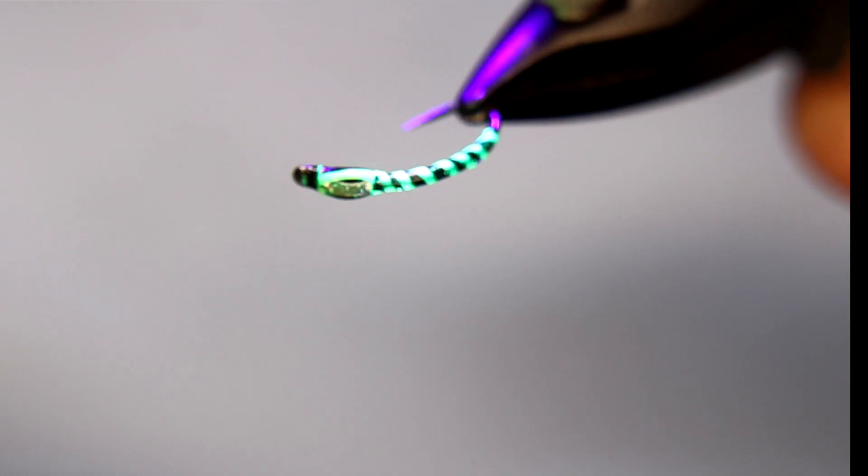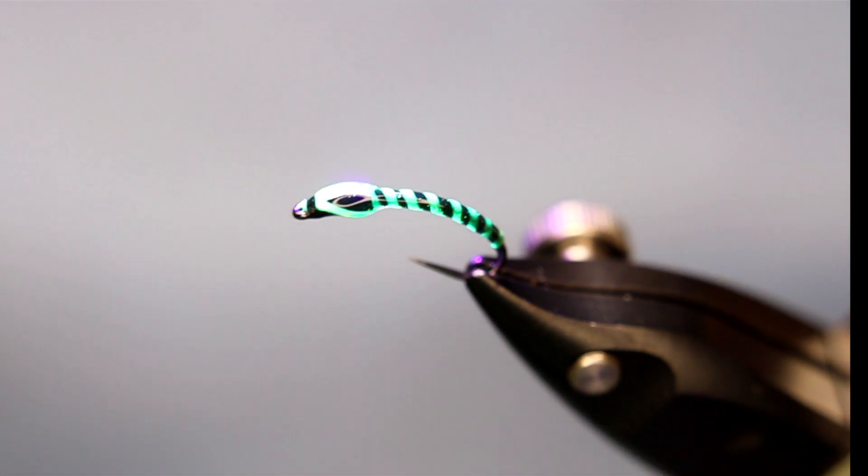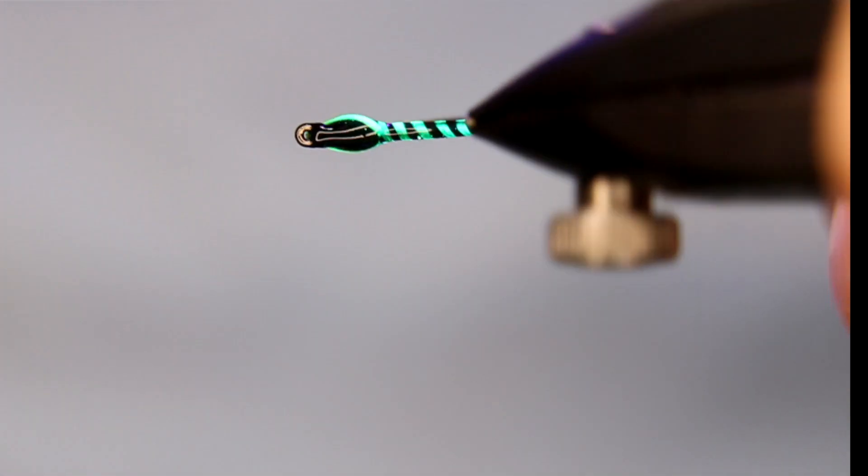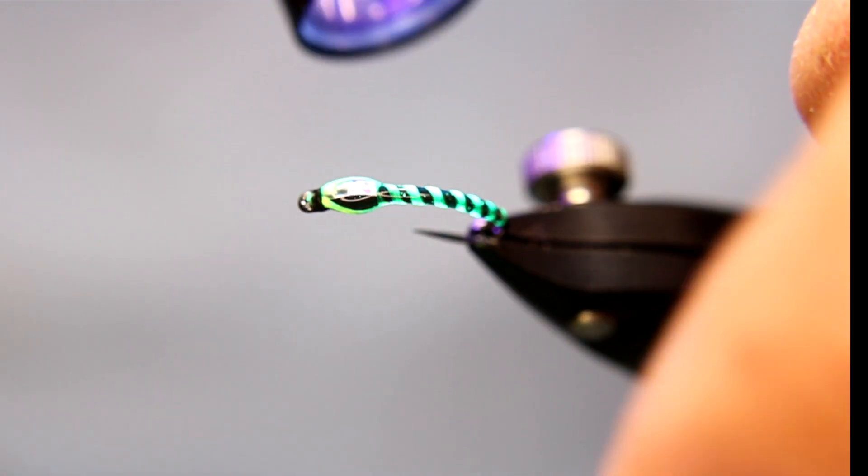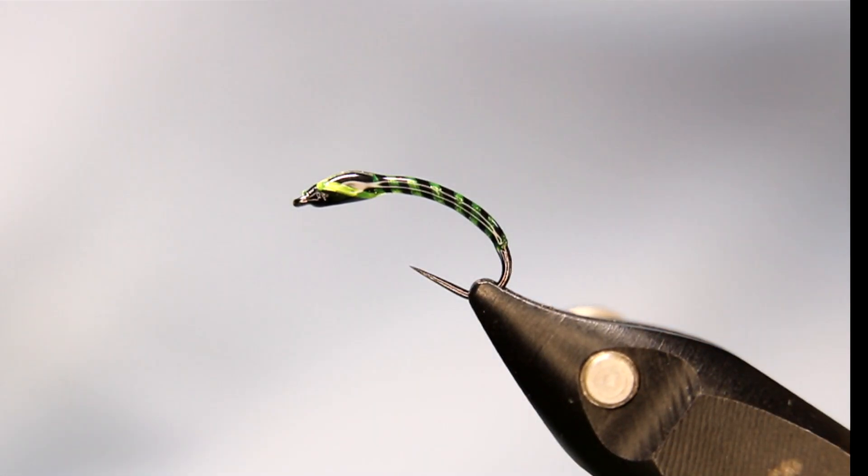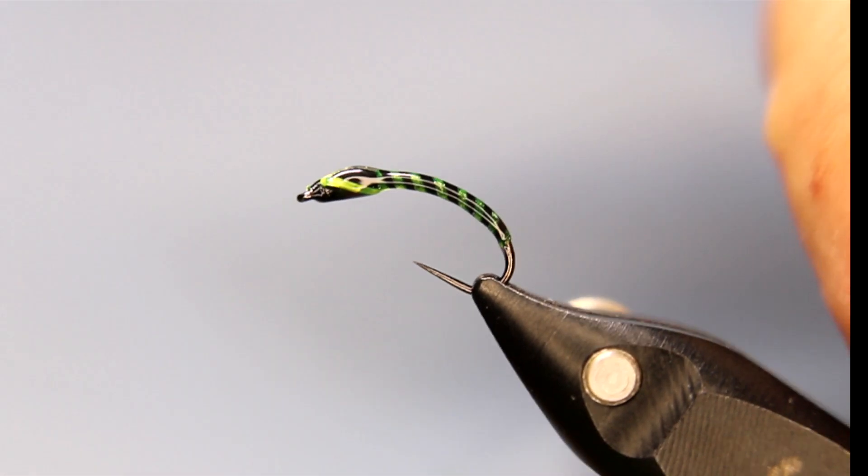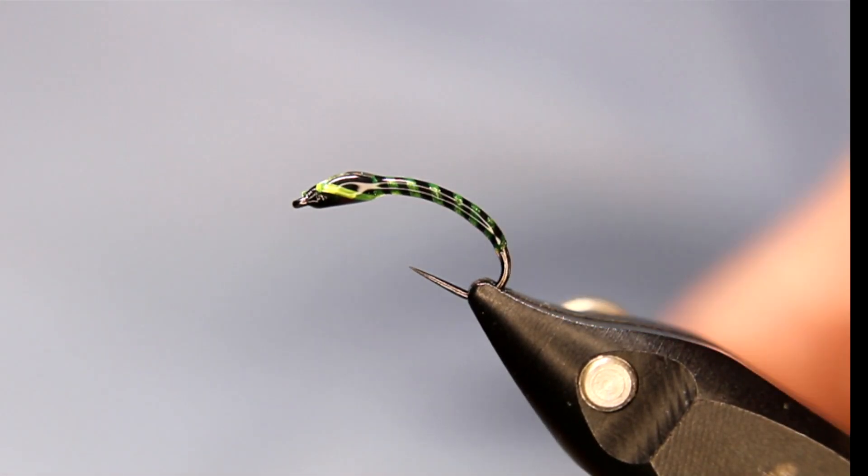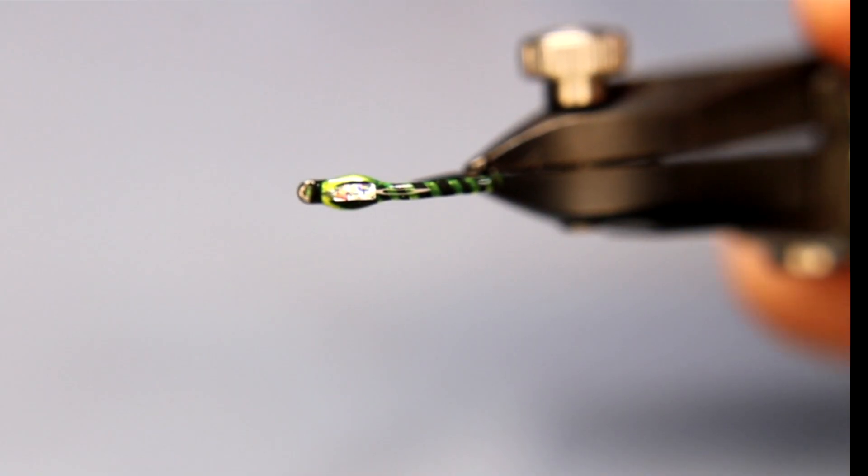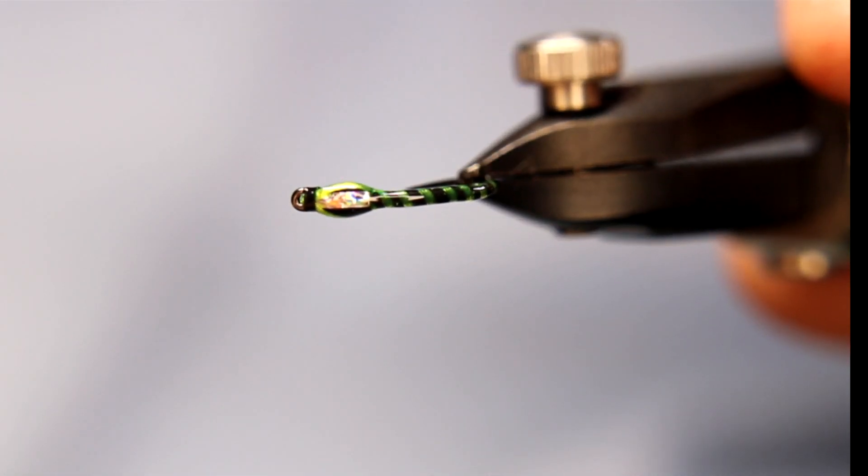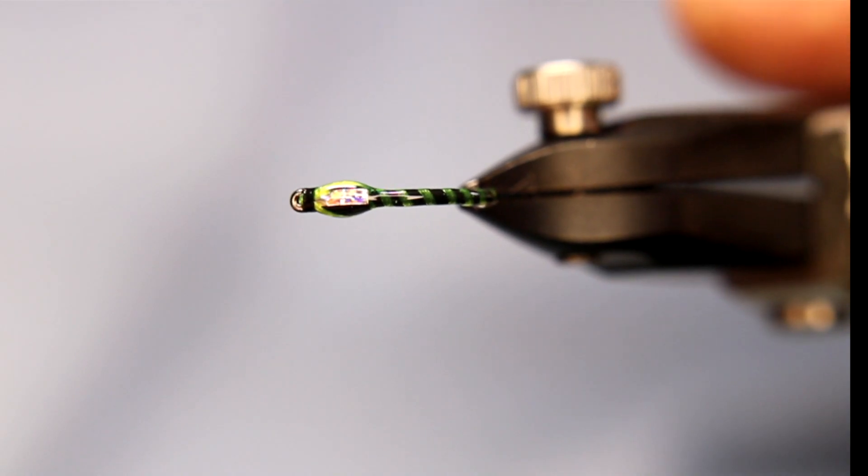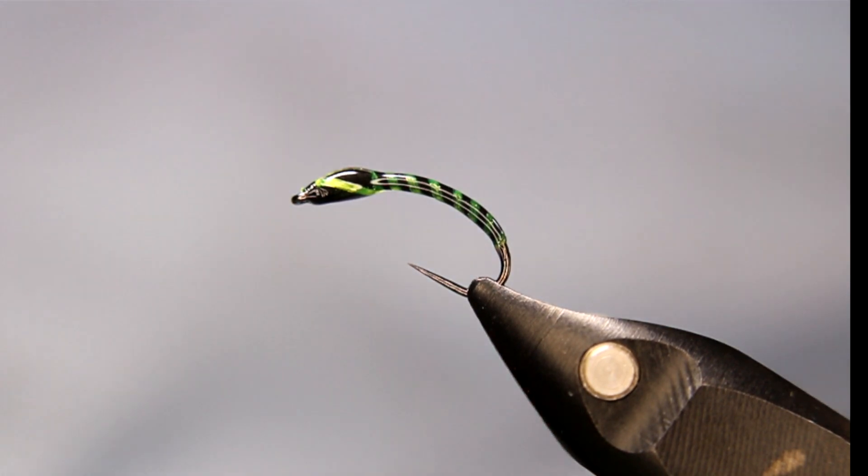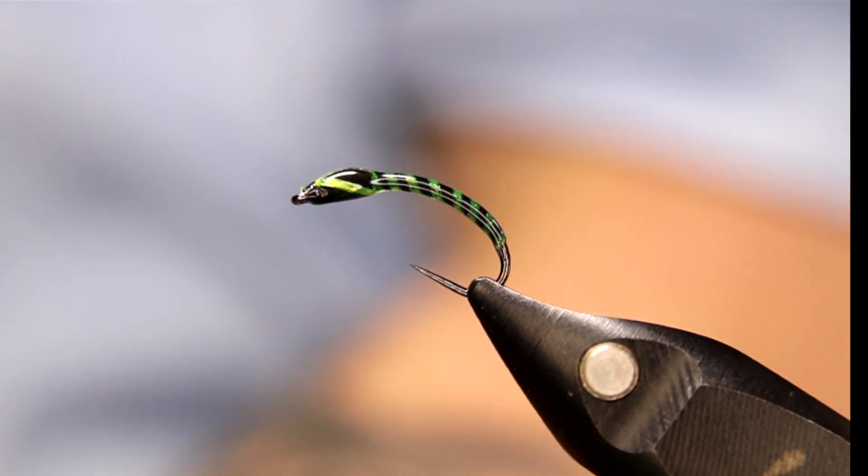And there's my little chartreuse buzzer. I'm just making sure that's all nicely cured. And then I'll go back over it with a little coat of Sally Hansen's when I'm done. But that's it. That is my little chartreuse buzzer. Like those cheeks really stand out, and then that little bit of flash on the top there. That piece of hollow tinsel really helps, right? And you can switch that up, you can put green hollow tinsel up there or red or whatever, just to get a little bit of an additional little hot spot.